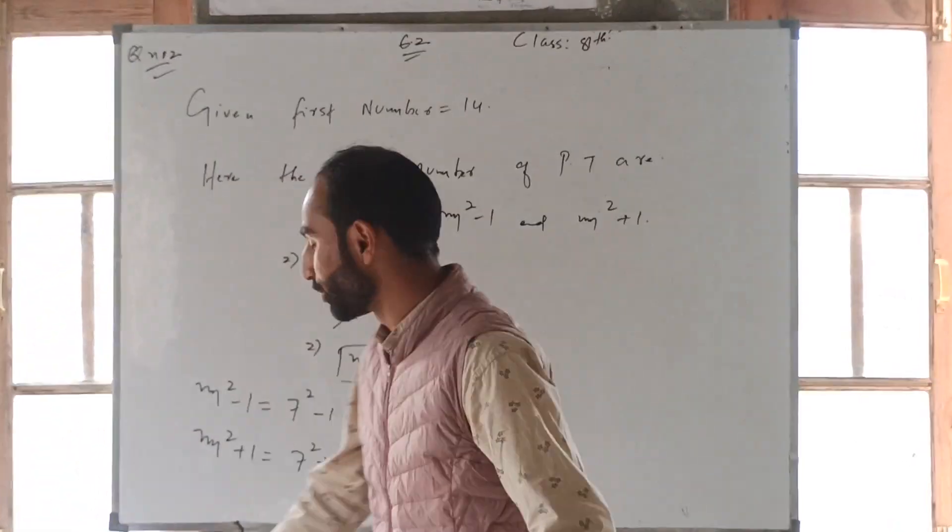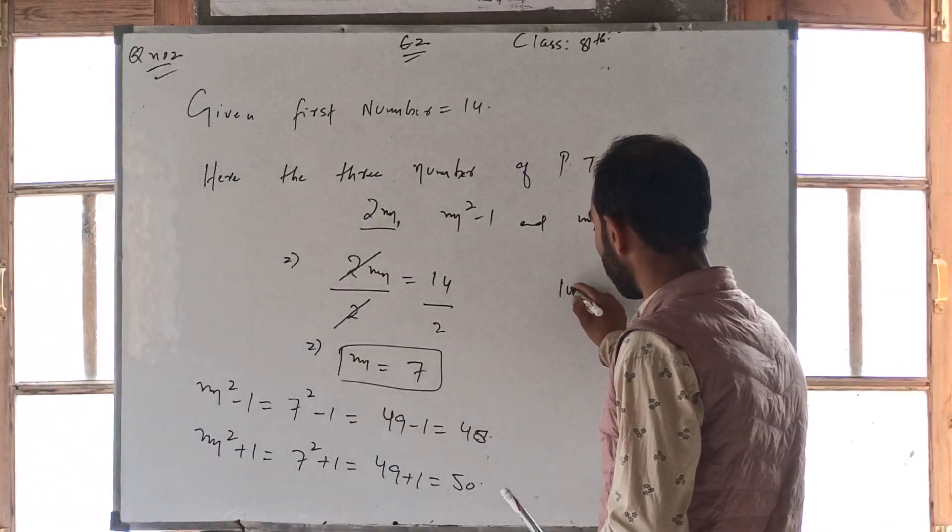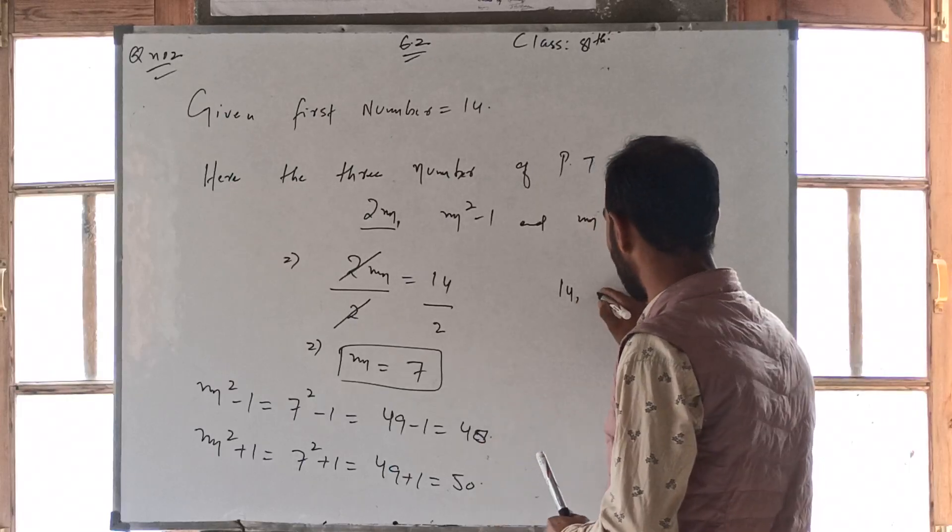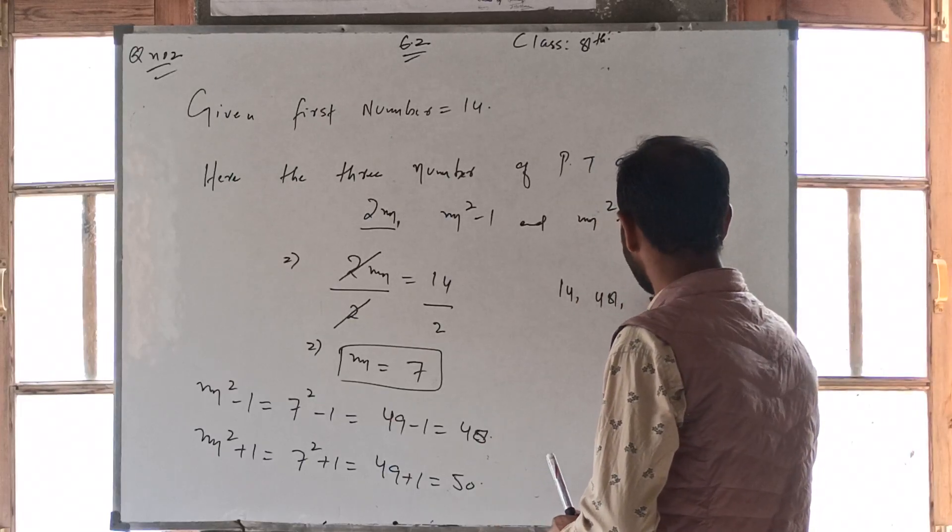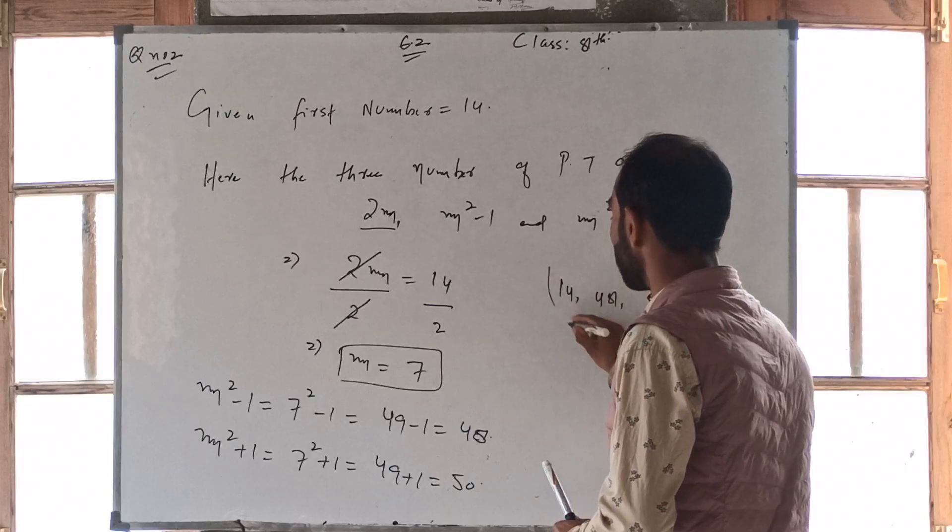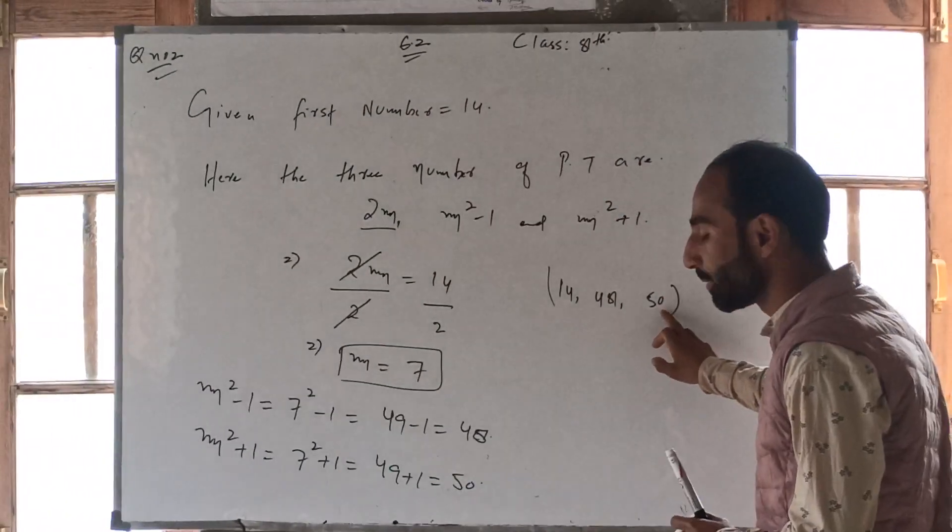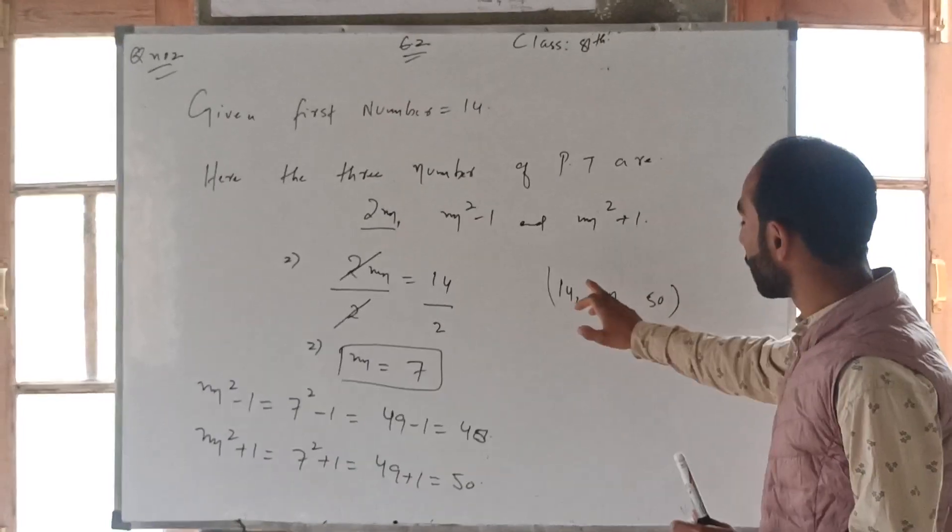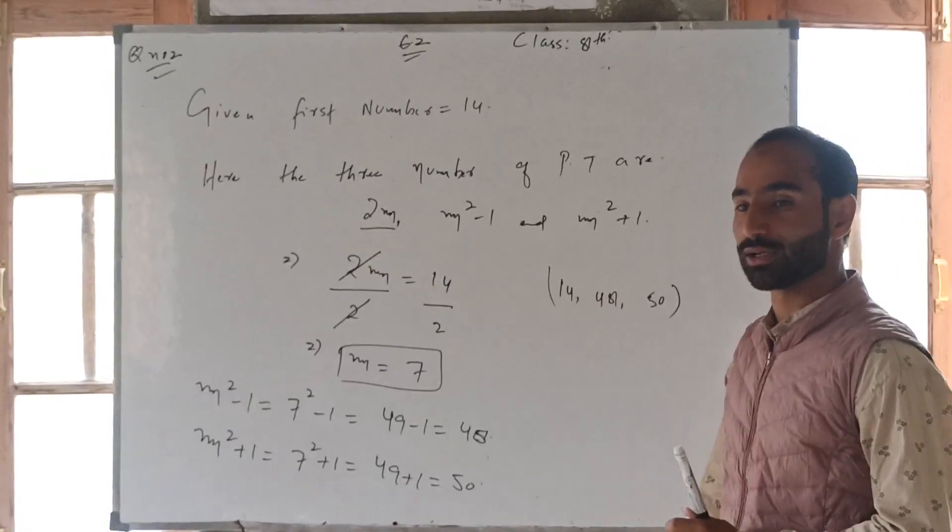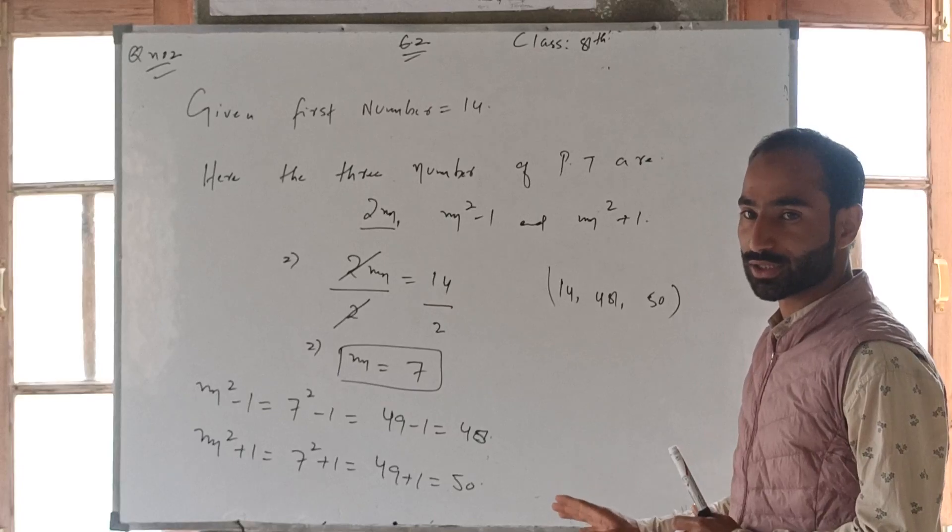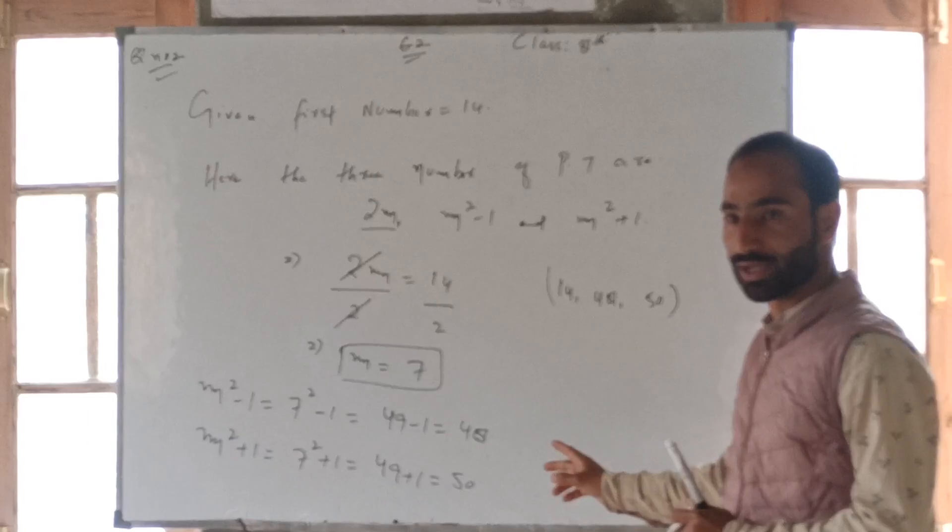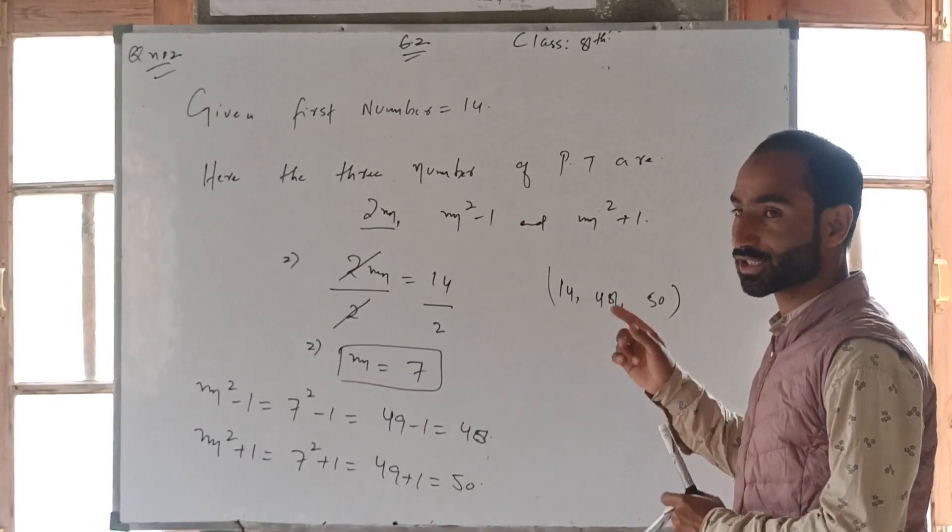Now, what is the first number? First number is given 14, second number is 48, and third number is 50. These are the three numbers of the triplet. If you have 50 square here, then you have 50 square. This is equal. Hence, complete the second of question number 2 of exercise 6.2.